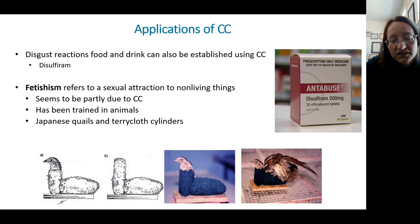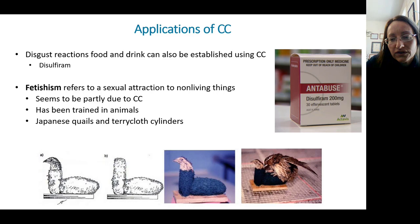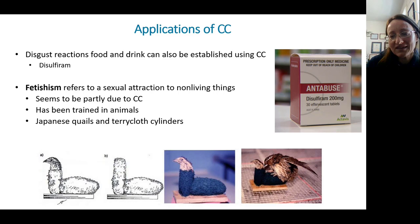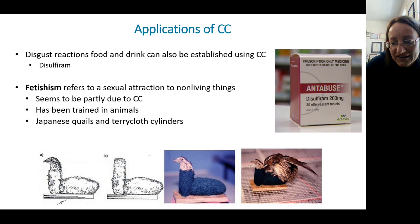Disgust reactions to food or drink can be established using classical conditioning. An example is disulfiram, known as Antabuse — if you take it and drink any amount of alcohol, you will be violently ill. This can teach people not to like the taste of alcohol. It's not a complete cure because cognition matters — people can stop taking it and go back to using — but some folks find it helpful.